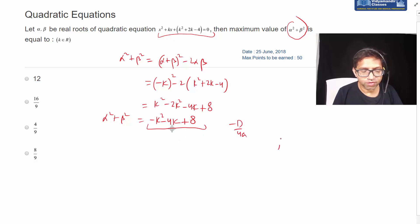minus d by 4a. In terms of k this will be a parabola, and maximum value of the parabola is the vertex y-coordinate, minus d by 4a, you can find, right?